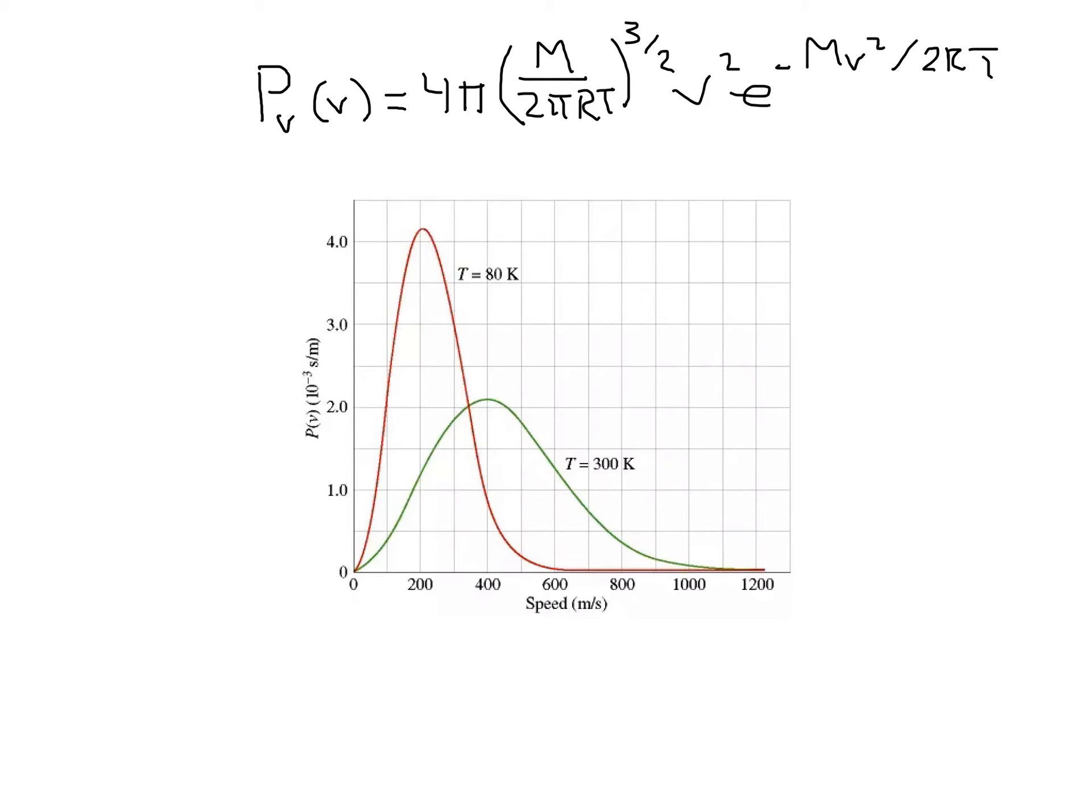Now, let's look at some properties of probability distributions in general. To be a good probability distribution, if I add up all the probabilities, I should get 1. So, in other words, if I take the area underneath this curve, the area underneath that curve should equal 1.